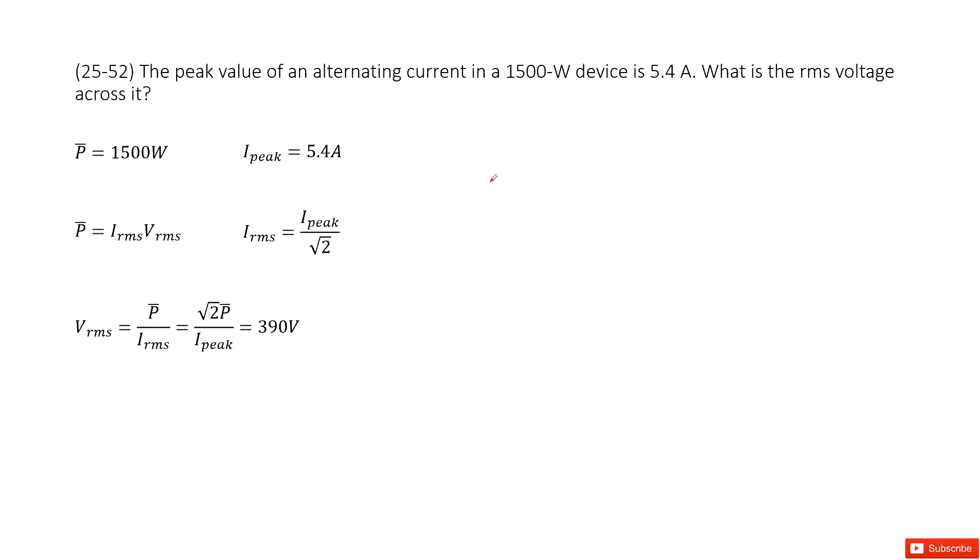Chapter 25 is about electric current and resistance. There we talk about alternating current, right? And the given quantity is about the device's power.